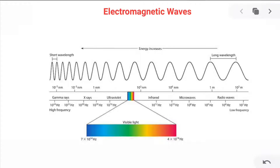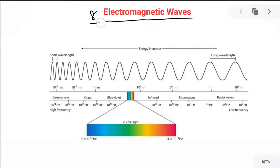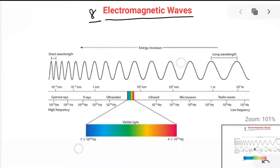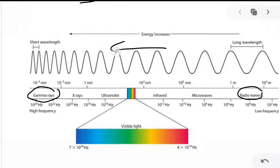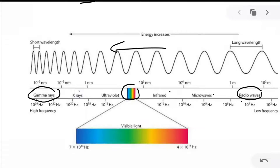Today we are going to start the chapter on electromagnetic waves. This is chapter number 8 from NCERT Volume 1. Electromagnetic waves means the entire electromagnetic spectrum, which ranges from gamma rays to low-frequency radio waves. In one direction we have radio waves, microwaves, infrared, and the visible part seen by the human eye. Then ultraviolet, X-rays, and finally gamma rays. In this direction, wavelength decreases.